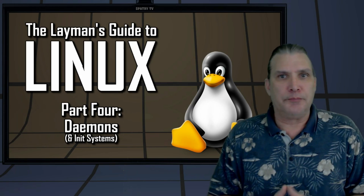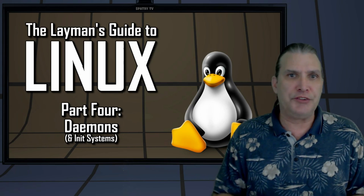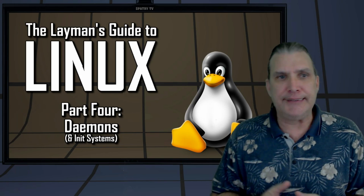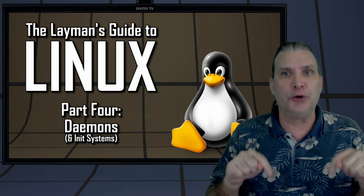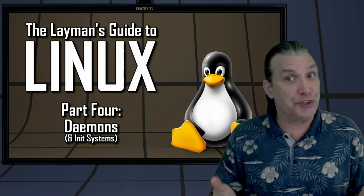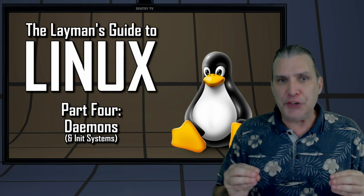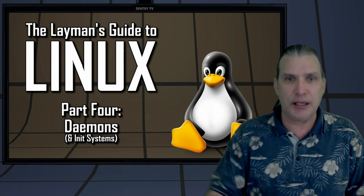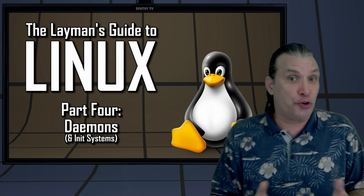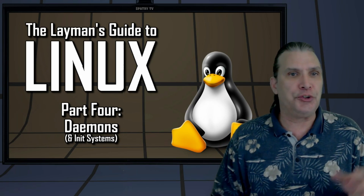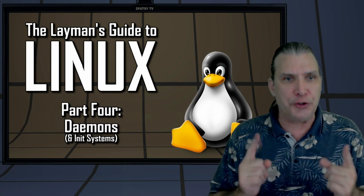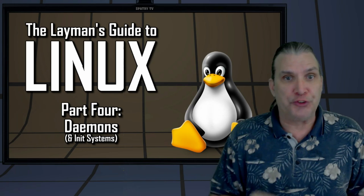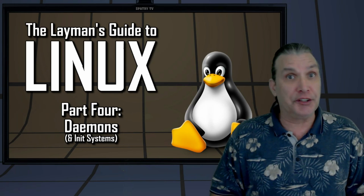And there you have it — the basics on background processes, daemons, services, and initialization systems. I have included in the show notes below some references you may find useful if you want to know more about this topic. If you find this series useful, please consider supporting us by visiting cupoflinux.com and hitting the donate button. Be sure to join us next time on the Layman's Guide to Linux, where we will take a tour of the user space, covering the shell, the X Windows system, window managers, desktop environments, and more. So until then, peace out.